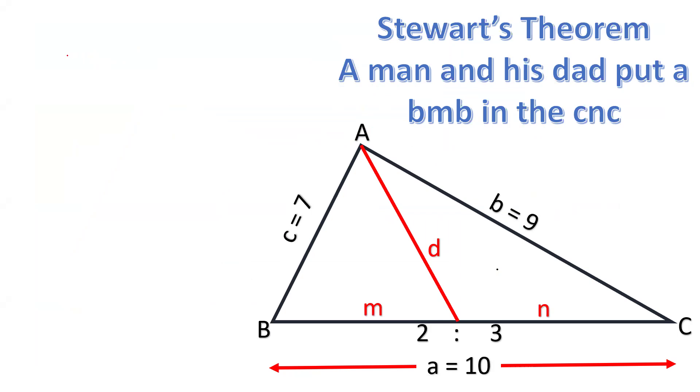Now how to represent this formula? Man can be written as A into MN. Man plus dad equals bomb plus sink. Or if we take A common, that will be A(MN + d²) = mb² + nc².